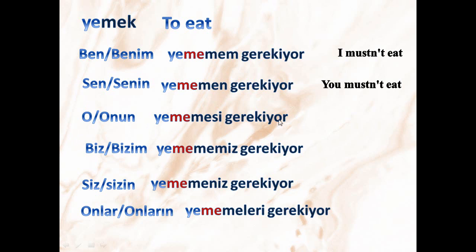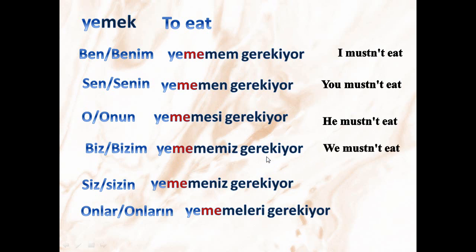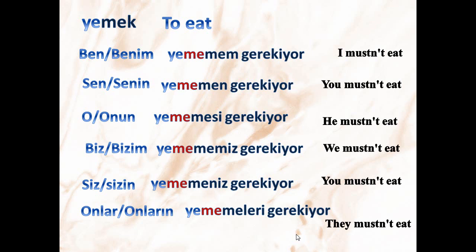O/onun yememesi gerekiyor — he/she/it mustn't eat. Biz/bizim yemememiz gerekiyor — we mustn't eat. Siz/sizin yememeniz gerekiyor — you (plural) mustn't eat. Onlar/onların yememeleri gerekiyor — they mustn't eat.